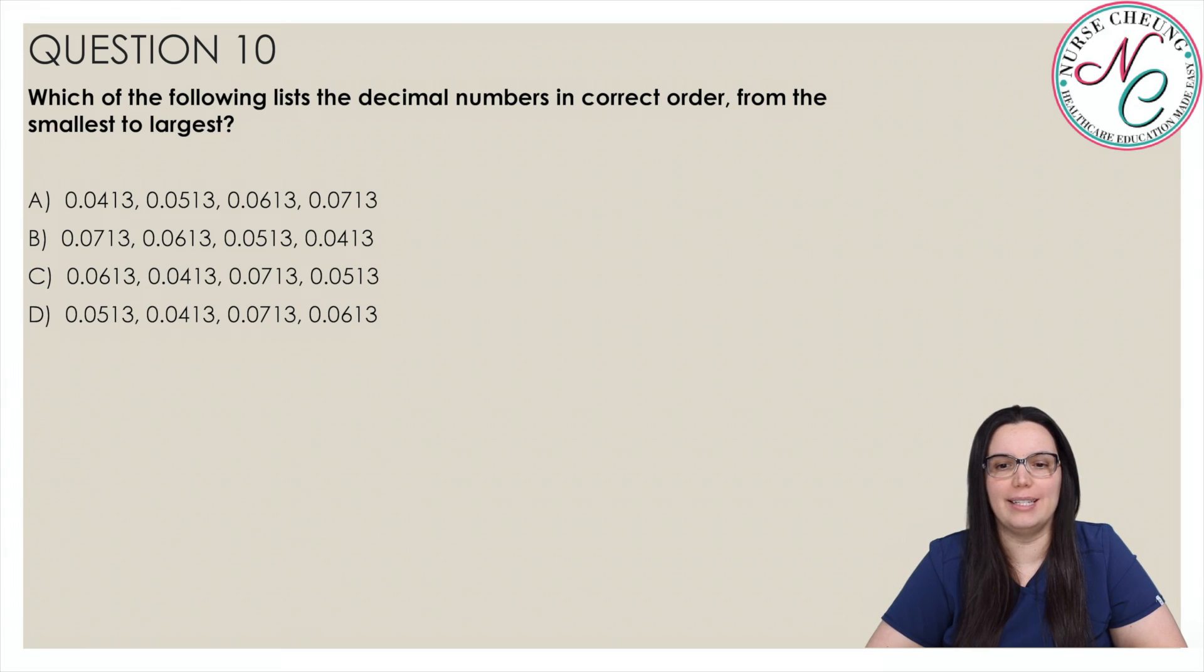Which of the following lists the decimal numbers in correct order from the smallest to the largest? Is it A, B, C, or D? And the correct answer is A.